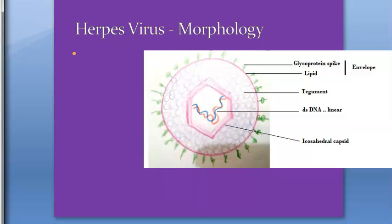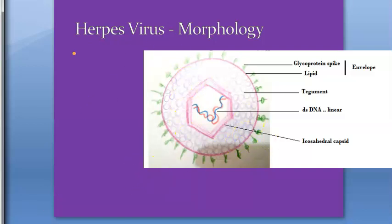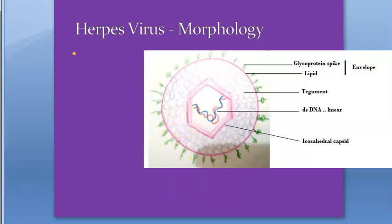Between the nucleocapsid and the envelope, you can see some purple circles — these are tegument, an amorphous asymmetric structure. The genome contains several reiterated or repeated genes which undergo sequence arrangement between members. There is no DNA homology between members except: 1 and 2 have some homology, and 6 and 7 exhibit some sequence homology.